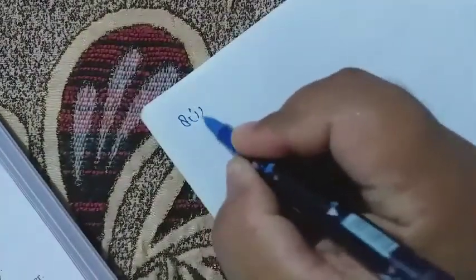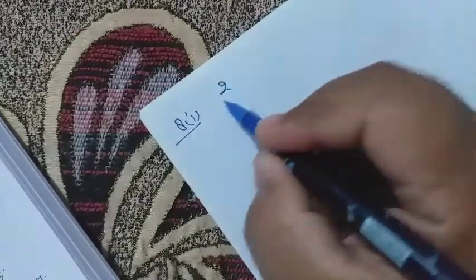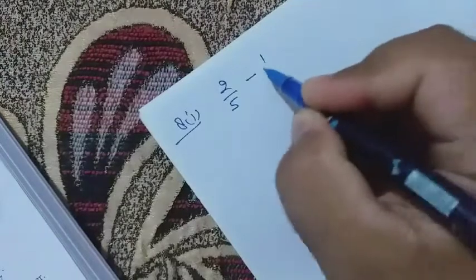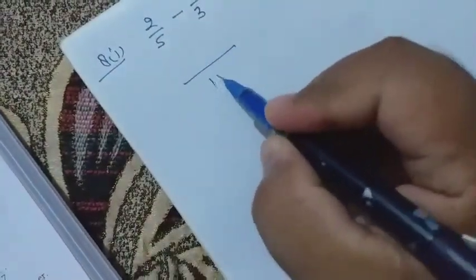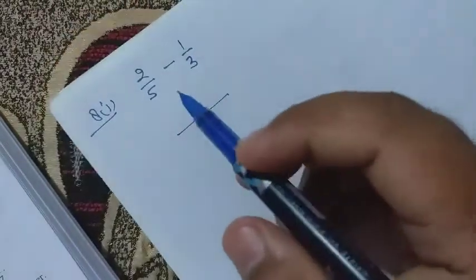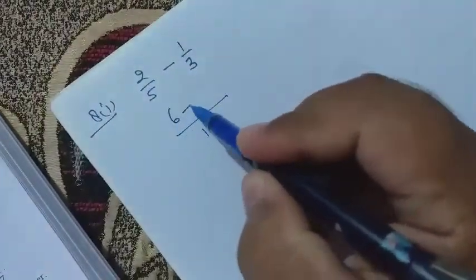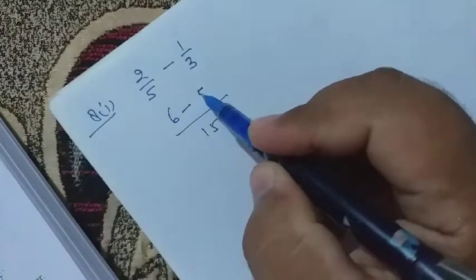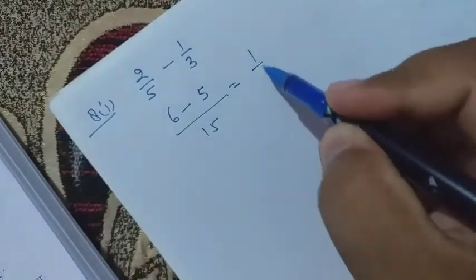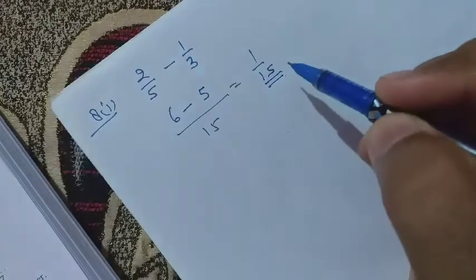So 1 upon 3, it is question number 8 first part. Subtract 1 upon 3 from 2 upon 5 minus 1 upon 3. We take LCM of 15 and here 6 minus 5 become what, 1 upon 15. First question I solved and rest of the questions you please solve of question number 8.